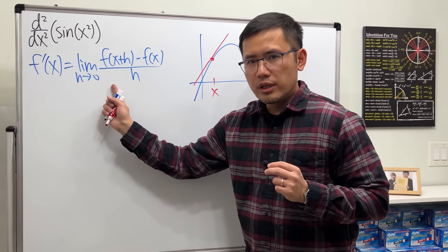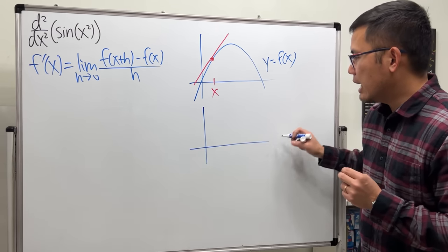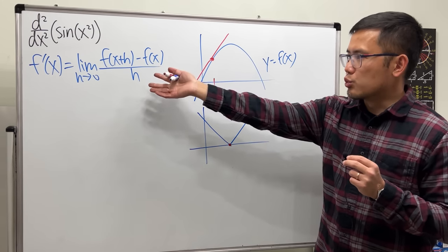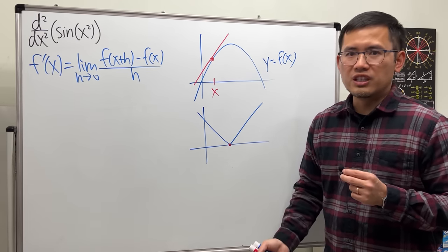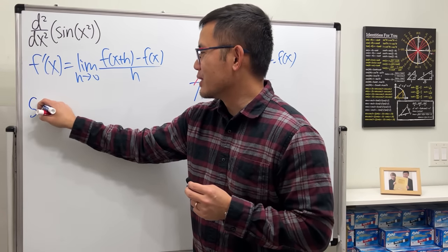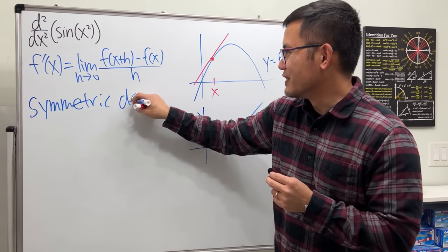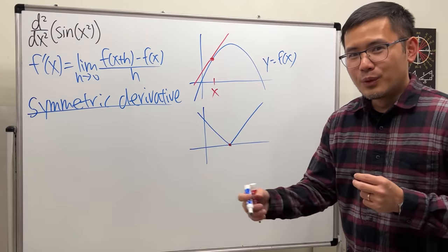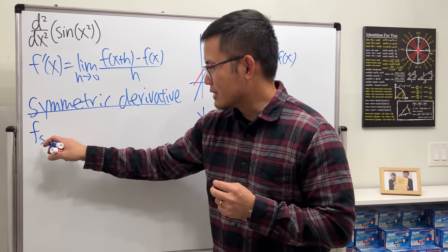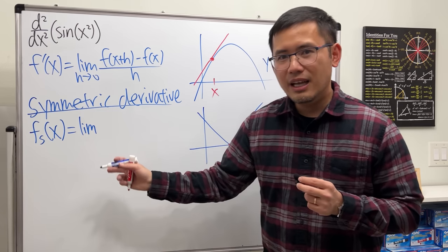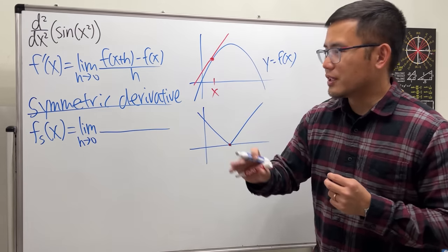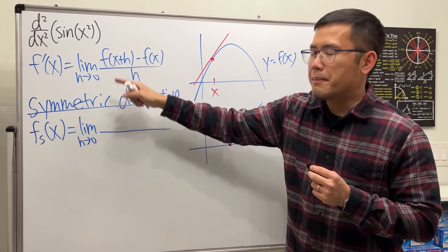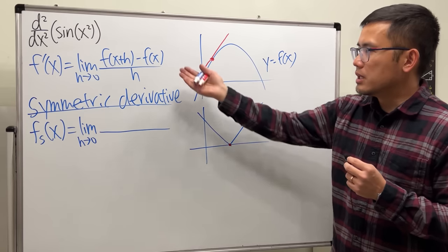The problem is that this regular derivative sometimes does not exist. For example, if we have an absolute value function, it looks like this and it has a corner here — the regular derivative does not exist there. So what can we do? We can do the so-called symmetric derivative. The notation is f with a little subscript s of x, and it is still going to be the limit as h approaches zero. Now, where did we get f of x plus h? This is pretty much the slope formula.